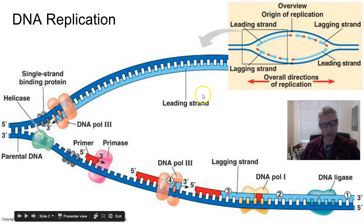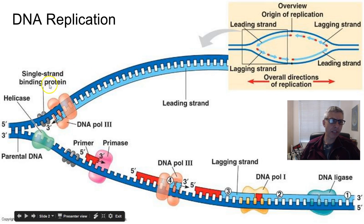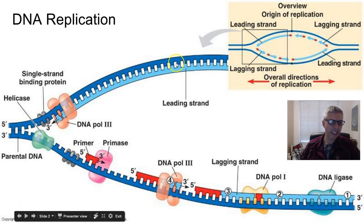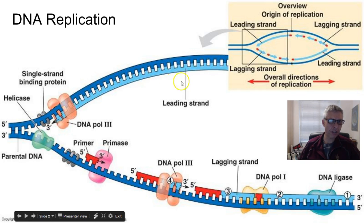Now there's the leading strand up here. It's called the leading strand because this part is easy to copy — DNA polymerase III is able to hop on and follow the helicase, just like going down train tracks, and attach free nucleotides that are in this area. It matches them up using Chargaff's rule: A to T, G to C, and just keeps going. That is DNA polymerase III's job.